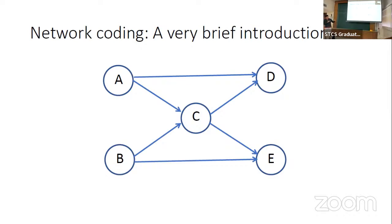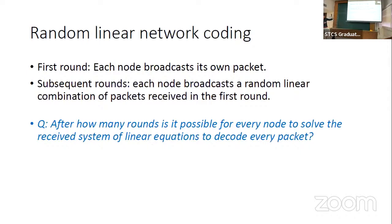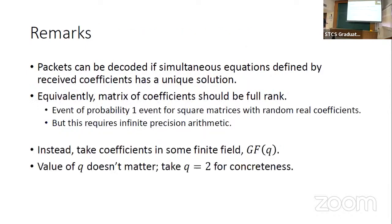What intermediate nodes do is compute random linear combinations over some finite field of the messages they have received, and broadcast that. In the first round each node broadcasts its own packet; in subsequent rounds every node broadcasts a random linear combination of the packets received in the first round. We are done when every node can recover all packets — meaning it can solve the system of linear equations from the received coded combinations. The coefficient vectors must form a full-rank matrix.